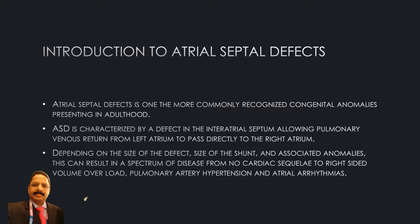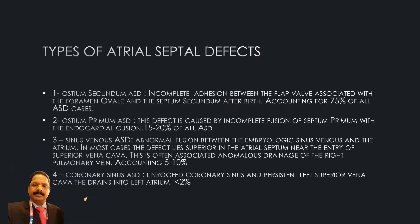Depending on the size of the defect, size of the shunt, and associated anomalies, this can result in a spectrum of disease — from no cardiac symptoms to right-sided volume overload, pulmonary artery hypertension, and atrial arrhythmias.